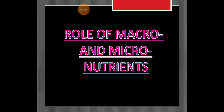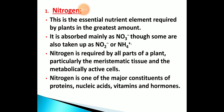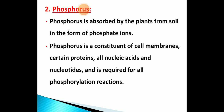Now looking at the role of macro and micronutrients. Nitrogen is an essential nutrient required for plant growth and development. It is absorbed in the form of NO3⁻ or sometimes as NH4⁺ (ammonia form). Nitrogen is required by all parts of the plant body, particularly meristematic tissues, which have high active portions. It mainly constitutes proteins, nucleic acids, vitamins, and hormones.